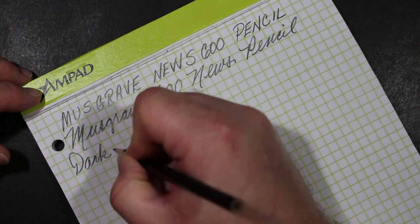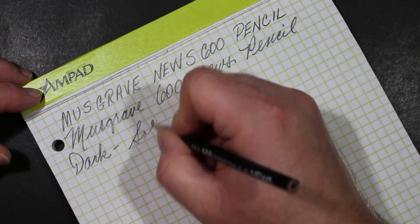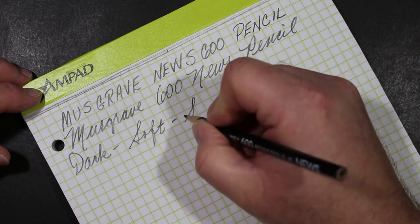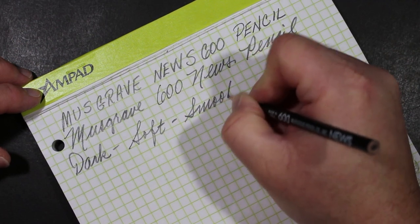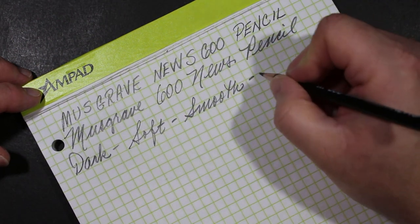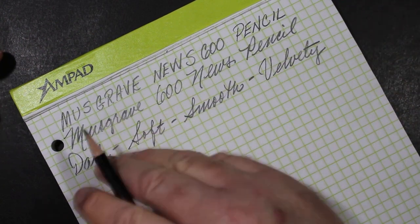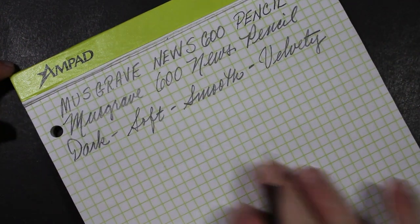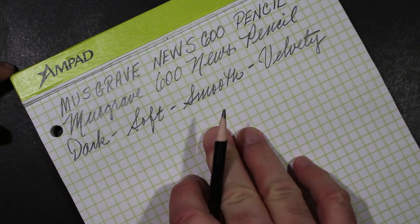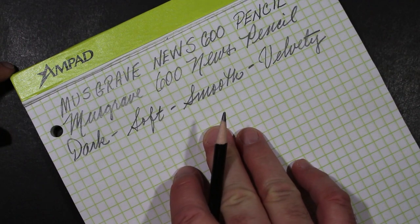But, this pencil is dark. This pencil is soft. This pencil is smooth. This pencil is velvety. It's all of those things. And you can see where my point is already.